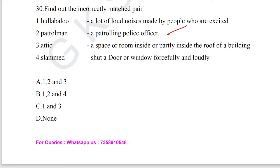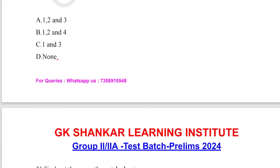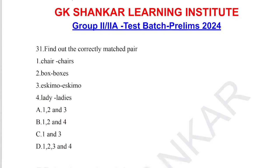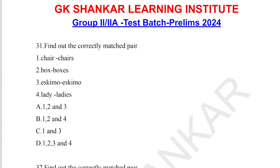Question number 30: find out the incorrectly matched pair. Options: hullabaloo — loud noise and excitement (correct); patrolman — patrolling police officer (correct); attic — a space or room inside the roof of the building (correct); slammed — shut a door or window forcefully and loudly (correct). All are correctly matched, so the answer for question number 30 is none — option D.